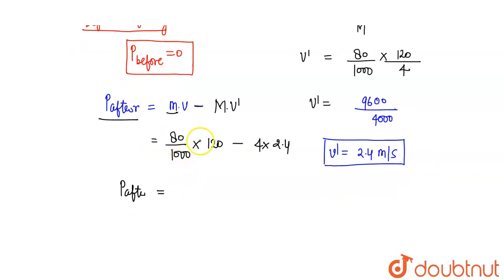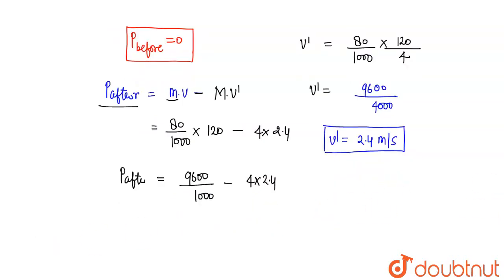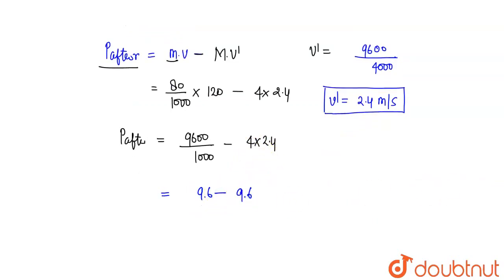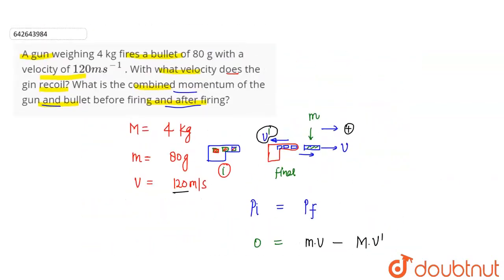Solving: 12 into 8 = 96, so 9600 divided by 1000 = 9.6. And 4 into 2.4 = 9.6. So momentum after firing = 9.6 minus 9.6 = zero. This shows that when the bullet is fired, the combined momentum of the gun and bullet after firing is also zero — momentum is conserved.